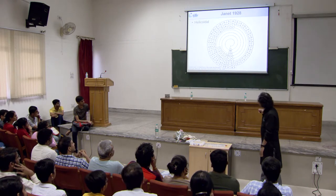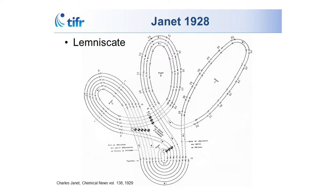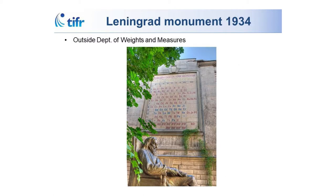There's a guy called Charles Janet, a Frenchman, who has various representations of periodic tables. Think of any geometrical shape and somebody has a periodic table for it. There's a helicoidal periodic table, a lemniscate. Janet also gives us the left-step periodic table where he separates S, P, D, and F blocks. The only thing we've done is move hydrogen and helium to the other side, but he proposed this left-step periodic table in 1928. After that, this is the first monument to a periodic table — 1934, Leningrad.